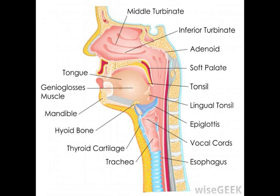Supporting both the condyloid and coronoid processes is the ramus. This part has two surfaces and four borders, and plays a part in the innervation of the mandible and the lower teeth it supports.